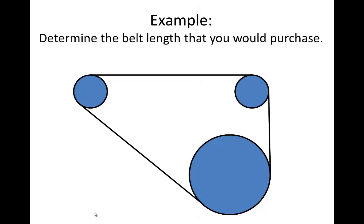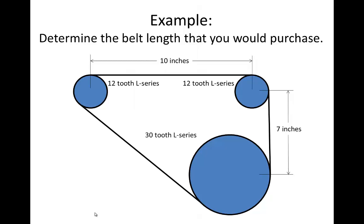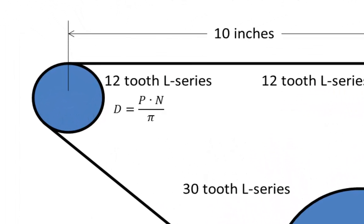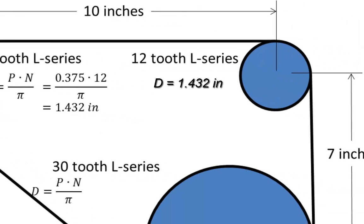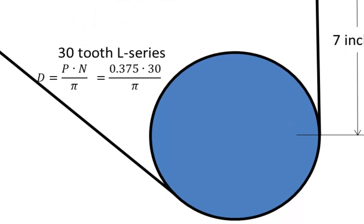Let's work through this complex example together. Suppose we are designers needing to know which belt length to order. We decide this distance needs to be around 10 inches and this distance around 7 inches. One pulley is a 12-tooth L series, another is also 12-tooth L series, and the third is a 30-tooth L series. We first determine the pitch diameters: the L series pitch is 3/8 inch. For the 12-tooth pulleys: (0.375 × 12) / pi = 1.432 inches. For the 30-tooth pulley: (0.375 × 30) / pi = 3.581 inches.